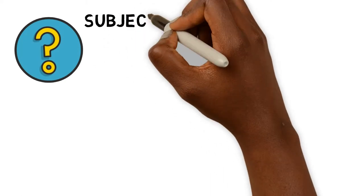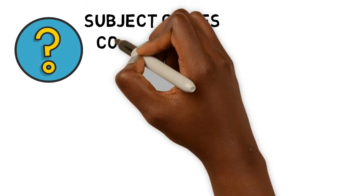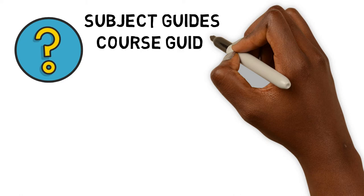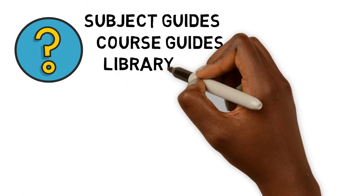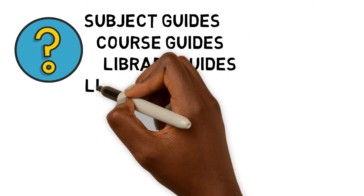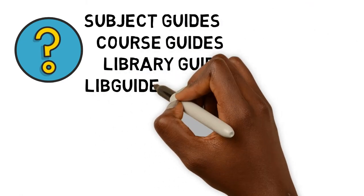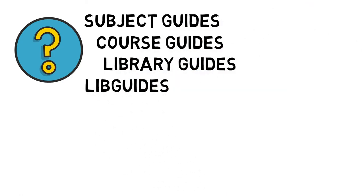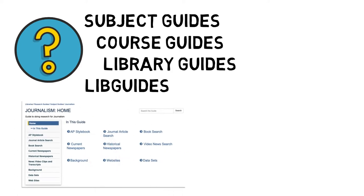What is a research guide? Research guides, sometimes called subject guides, course guides, library guides, or libguides, are online tools that contain targeted information on a particular topic to support our campus community.